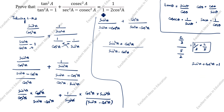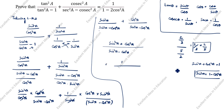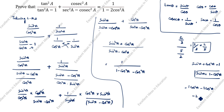What we need to prove is 1 divided by (1 minus 2cos²a). Here we have sin²a and cos²a in the denominator, and we need to change sin²a into cos²a. So sin²a equals 1 minus cos²a. Substituting: sin²a minus cos²a becomes (1 minus cos²a) minus cos²a, which is 1 minus cos²a minus cos²a. Minus cos²a and minus cos²a gives minus 2cos²a. So we write 1 divided by (1 minus 2cos²a).